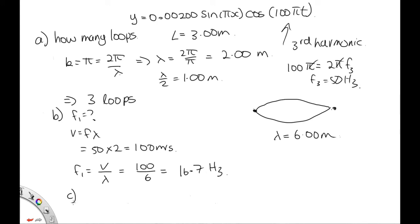Now, part c says we have the original frequency. So that was f₃. So we have the frequency is equal to 50 hertz. But the tension is now equal to 9 times the initial tension. And we're asked, how many loops are now present? Well, changing the tension is going to change the velocity of the waves.